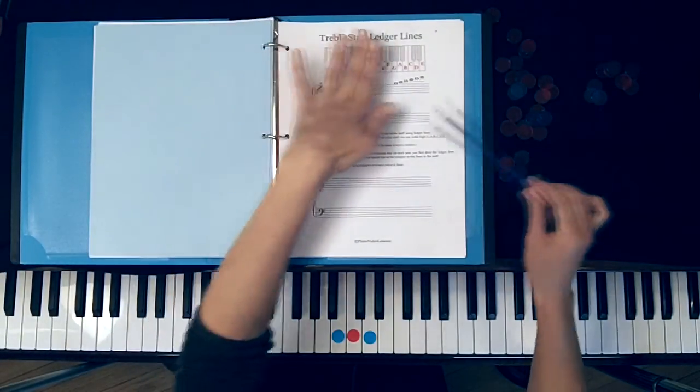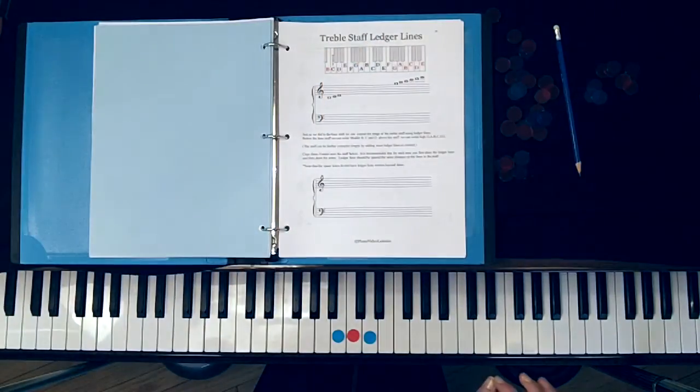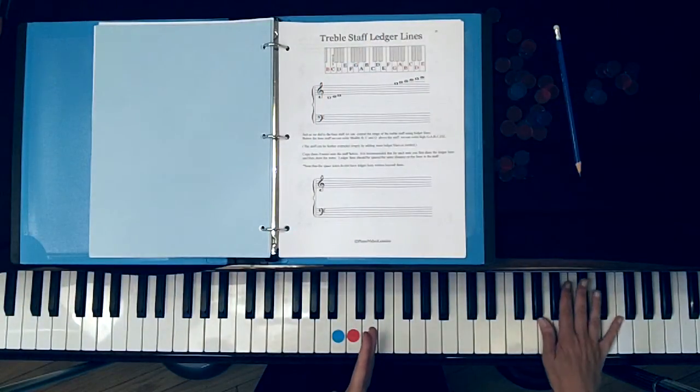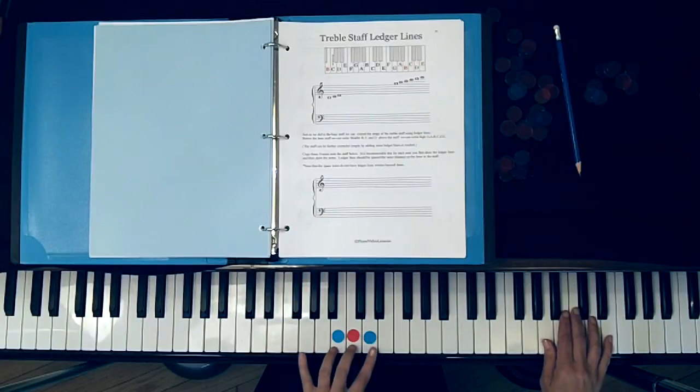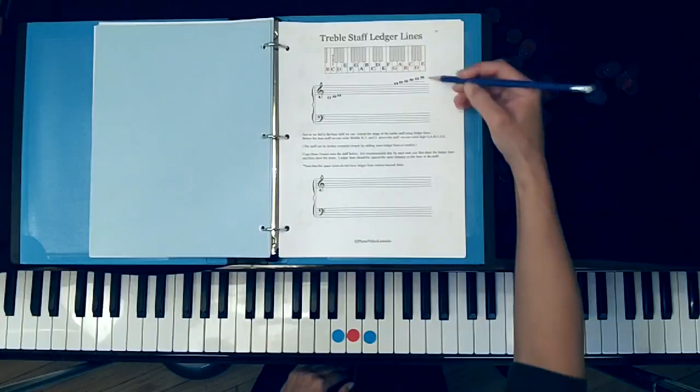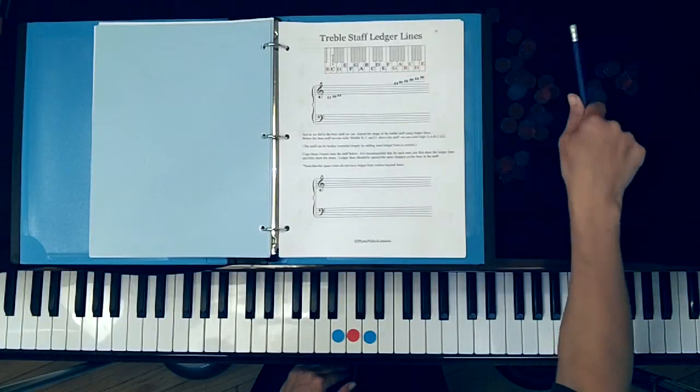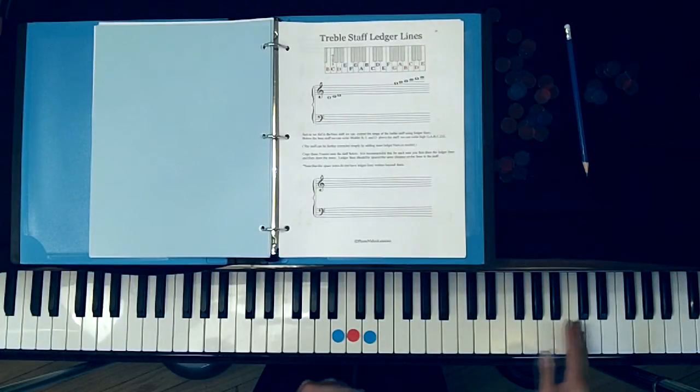Now we're moving on to the treble staff ledger lines, so we're going to be dealing with the super high notes up here in the treble clef as well as a couple more notes right here in the middle. A ledger line is a small line that extends the staff beyond its original reach.